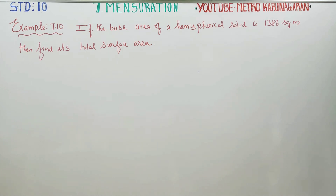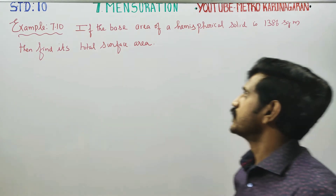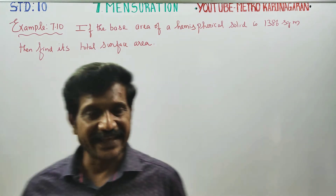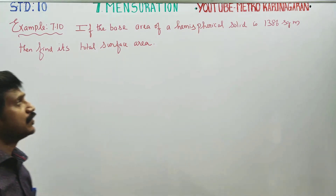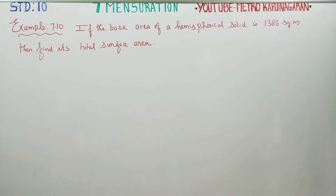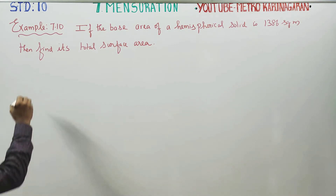Dear 10th standard students, I am Etro Karnagarind. In mensuration, example 7.10: if the base area of a hemispherical solid is 1386 square meters, find its total surface area.